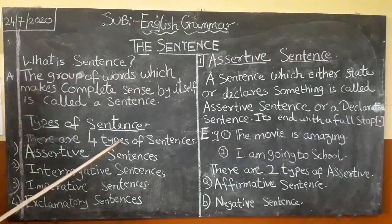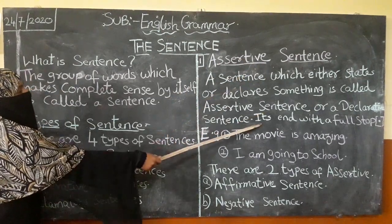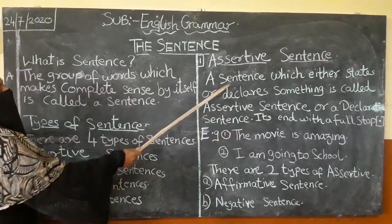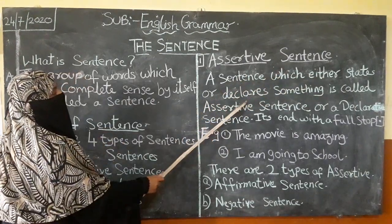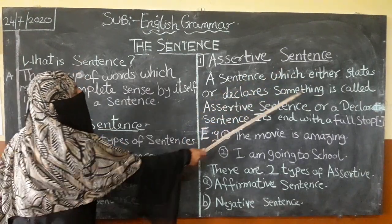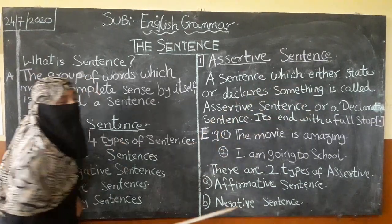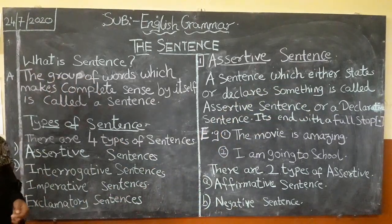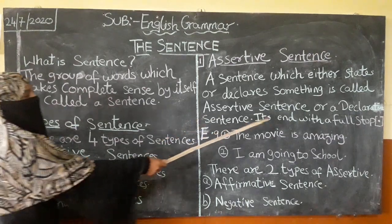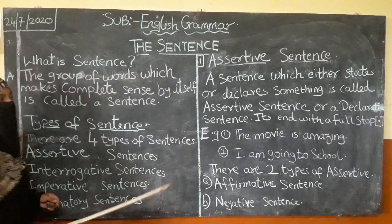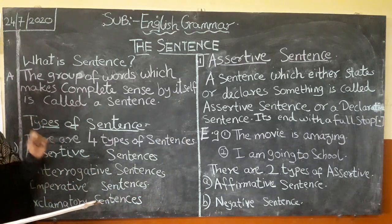What is an assertive sentence? Children, pay attention. A sentence which either states or declares something is called an assertive sentence, or a declarative sentence — you can also call it a declarative sentence. It ends with a full stop, making it a complete sentence.